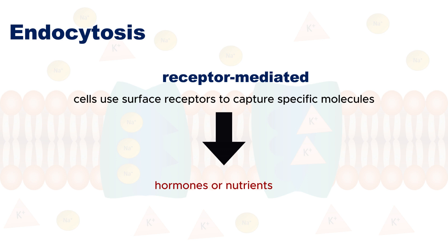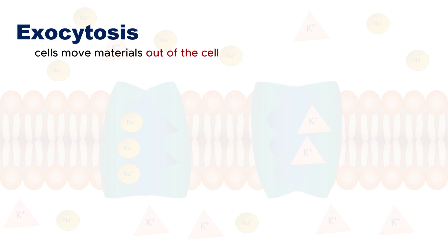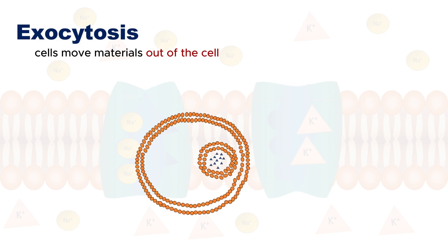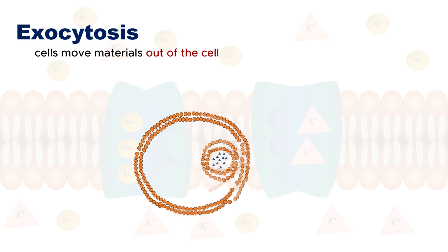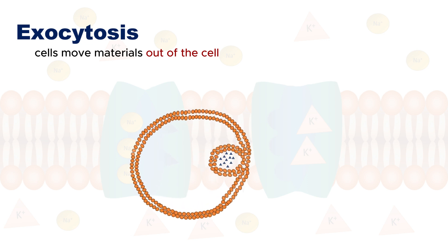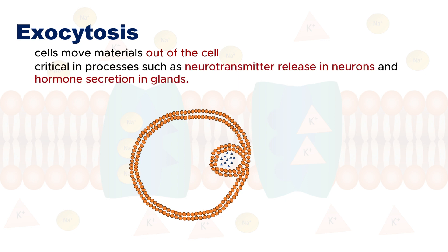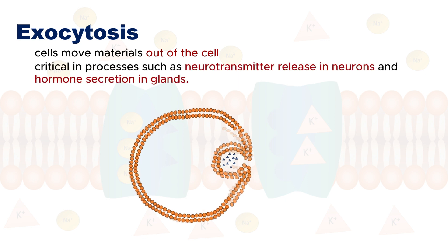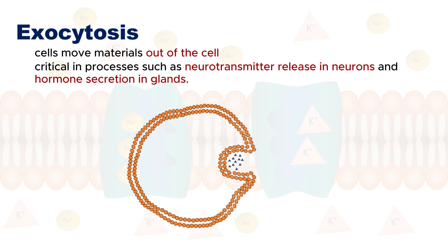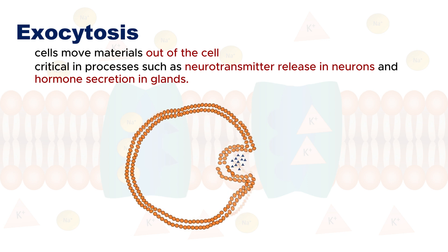Then we have exocytosis, the process by which cells move materials out of the cell. Vesicles containing substances like waste products, hormones, or neurotransmitters fuse with the plasma membrane.